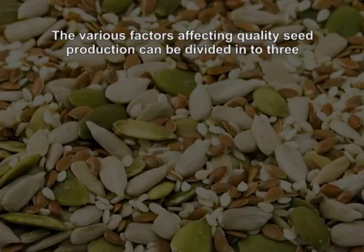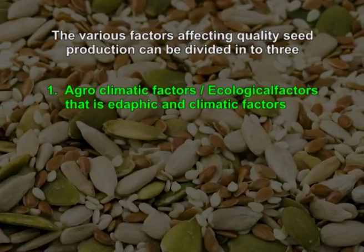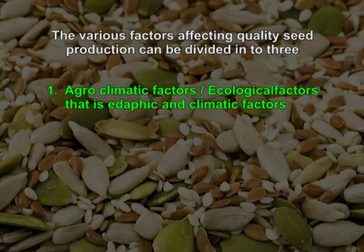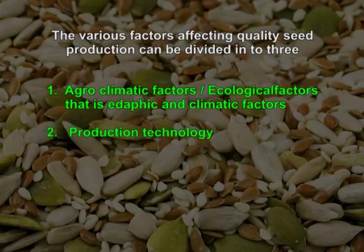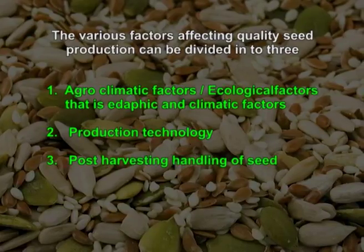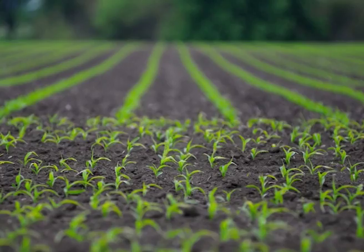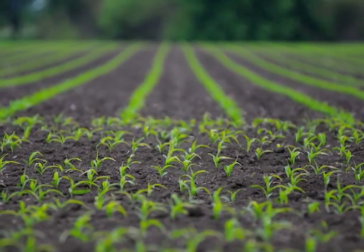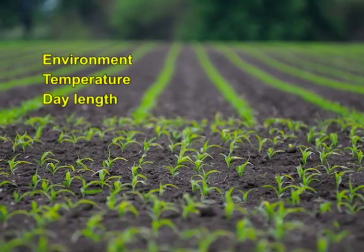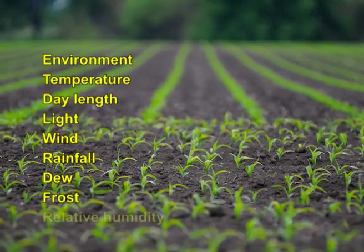The various factors affecting quality seed production can be divided into three. First one is agro-climatic factors or ecological factors — that is edaphic and climatic factors. Second one is production technology. And third one is post-harvest handling of seed. The ecological factors or agro-climatic factors include adaptability of the variety or hybrid to environment, temperature, day length, light, wind, rainfall, dew, frost and relative humidity.